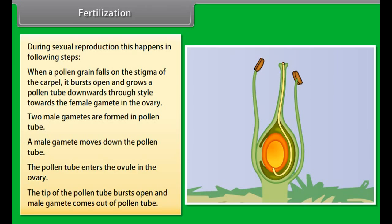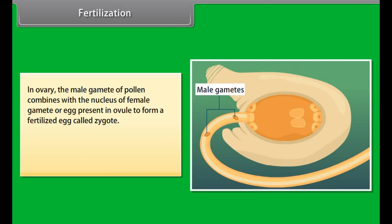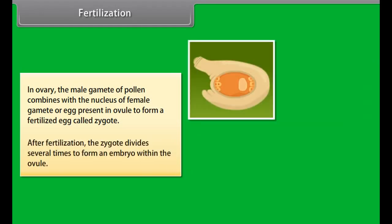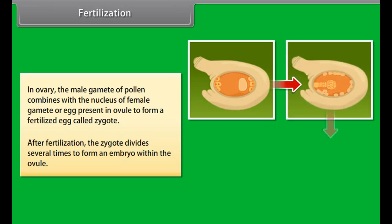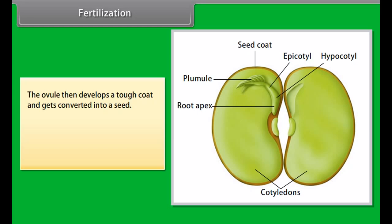When pollen grains from the anther of a flower are transferred to the stigma of the same flower or another flower of the same species, it is known as cross-pollination. After a pollen grain falls on the stigma, the next step is fertilization.